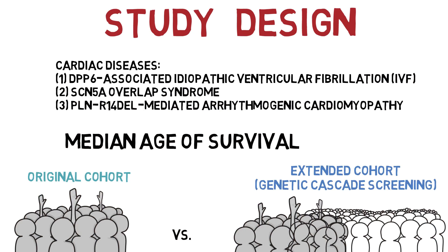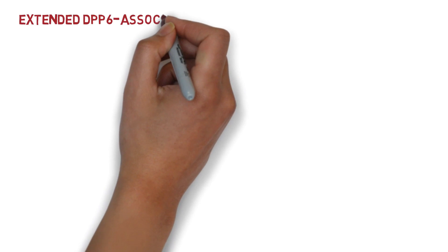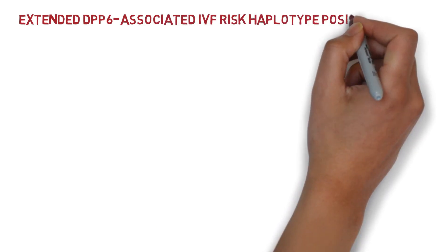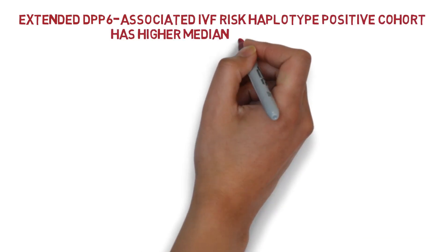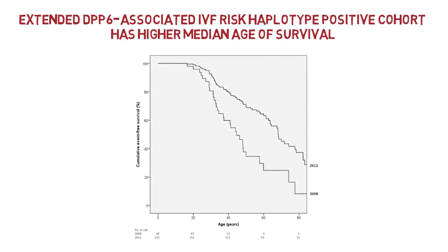Here we will focus on the analysis of DPP-6-associated IVF presented in Figure 1 of the paper. The authors found that the median age of survival for DPP-6-associated IVF was 44.6 years in 2008, which increased to 68.2 years when more families and haplotype-positive relatives were added to the analysis. This difference in survival forecast is seen in Figure 1a, with an improved survival curve after genetic cascade screening was performed and incorporated.